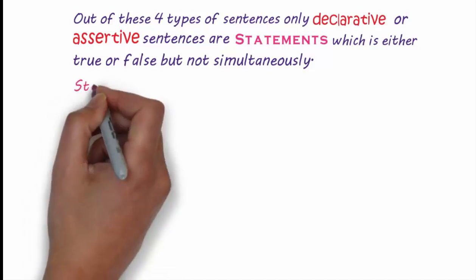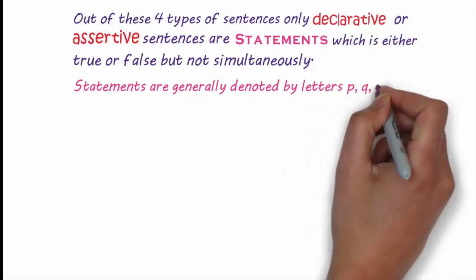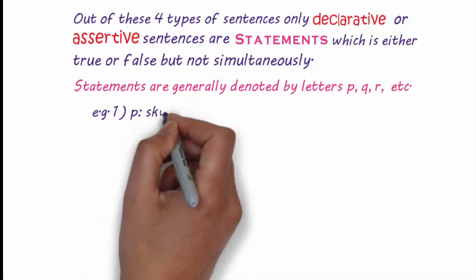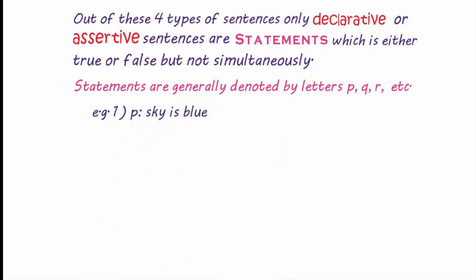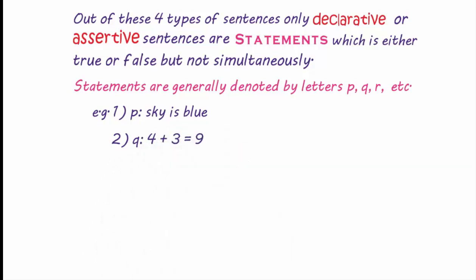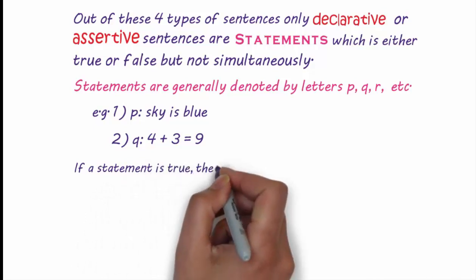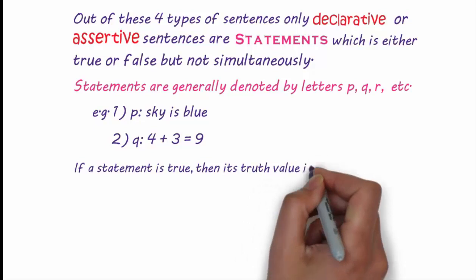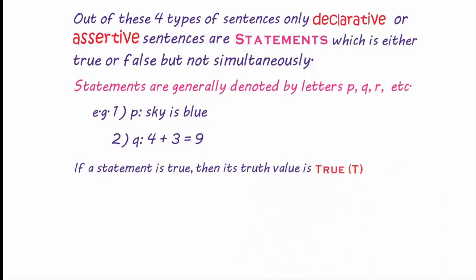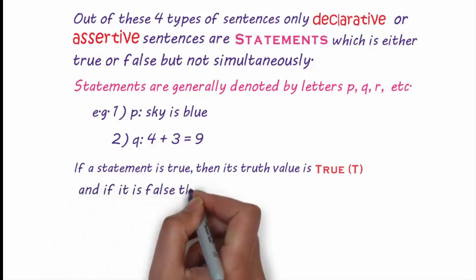Statements are generally denoted by letters P, Q, R, etc. Example: P denotes sky is blue. Q denotes 4 plus 3 is equal to 9. If a statement is true, then its truth value is true or T. And if it is false, then its truth value is false or F.